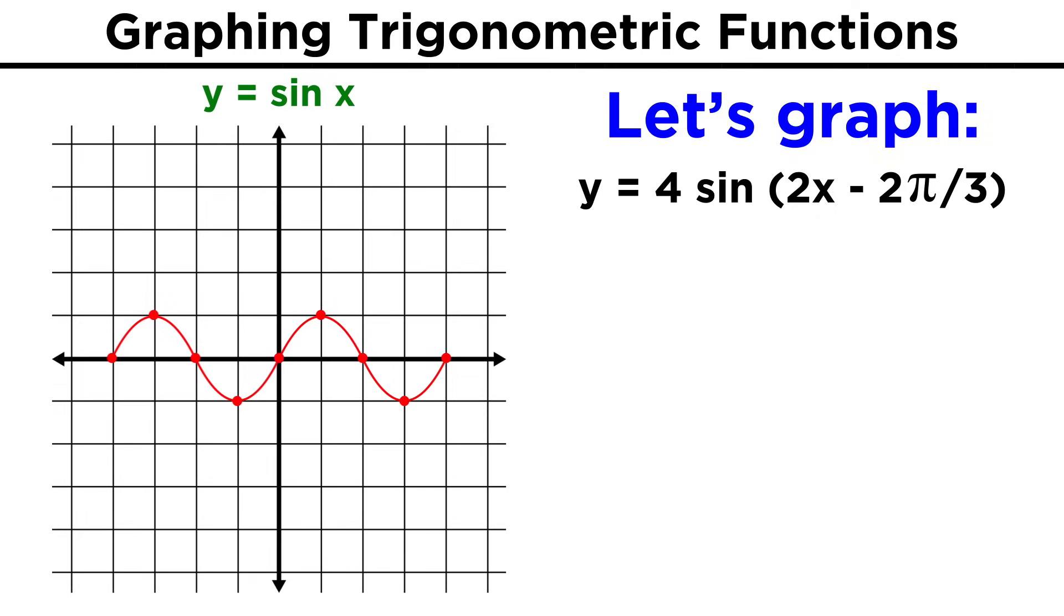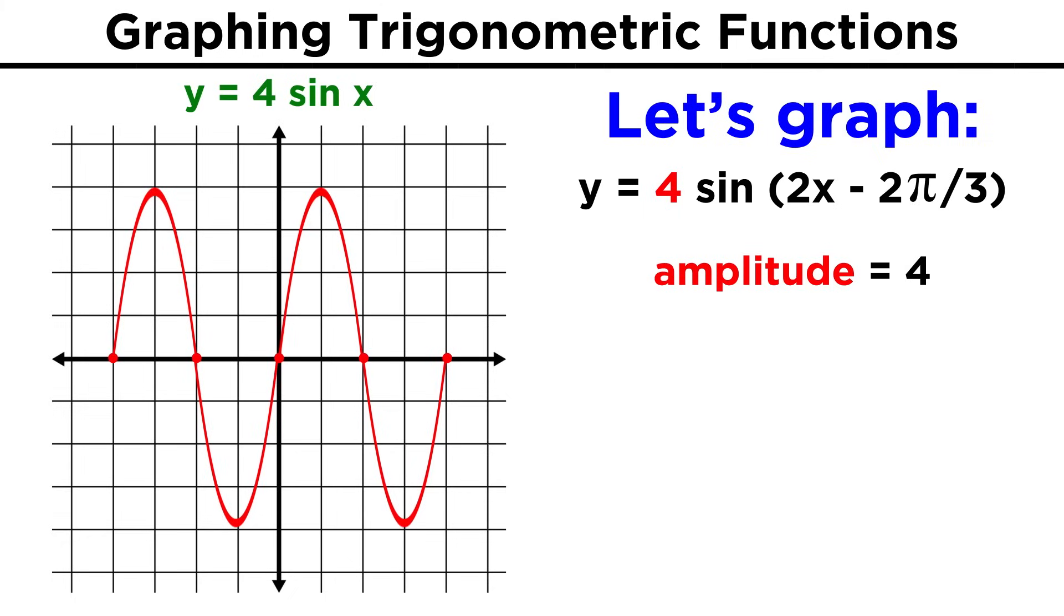Let's use what we've just learned to graph one period of four sine of the quantity two x minus two thirds pi. First let's find the amplitude. We can get that from this number here, which is four, so the function will move between negative four and four.